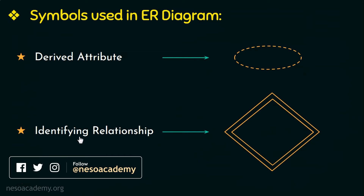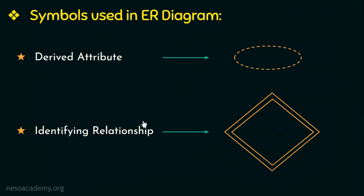Finally, we have the identifying relationship. A relationship between a weak entity type and its owner or strong entity type is called the identifying relationship, and it is represented by a double diamond. The relationship between regular or strong entity types is represented by a single diamond.